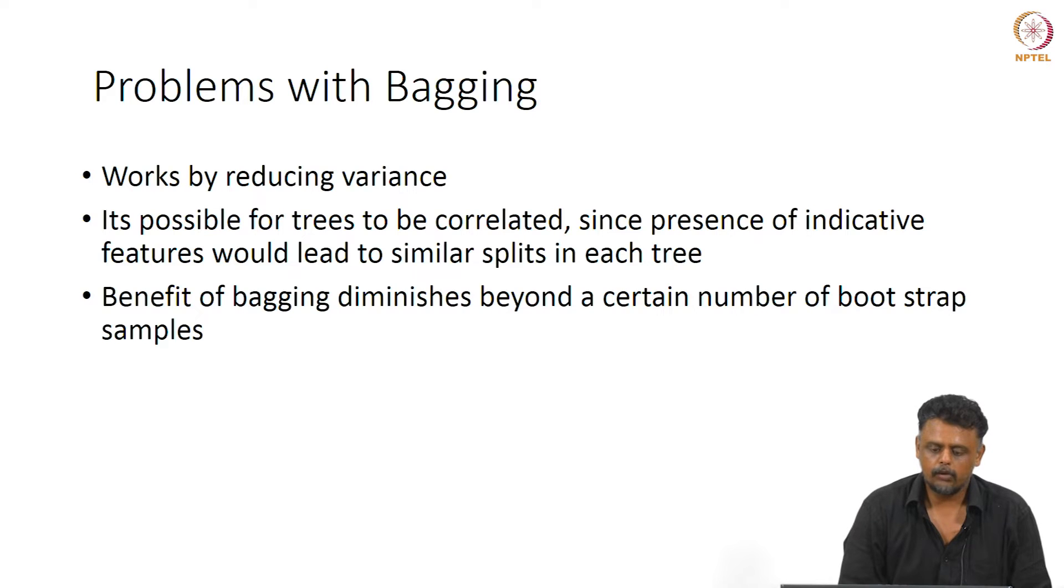However, the problem with bagging is that it's possible for trees to be correlated. If we have a couple of strong features which always split first or give the best information gain, then no matter how many trees you average over, they are correlated. Beyond a point, bagging will not reduce the error in your predictions. This is because there will be indicative features or strong features which lead to maximum information gain, and averaging correlated variables will not help reduce the variance.